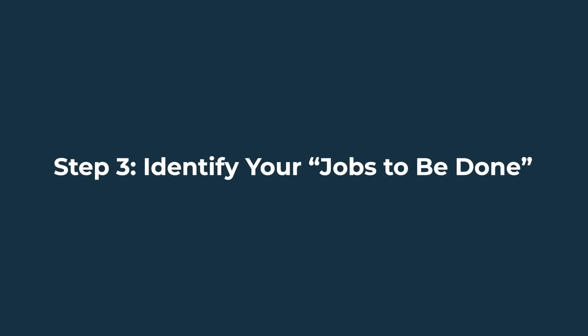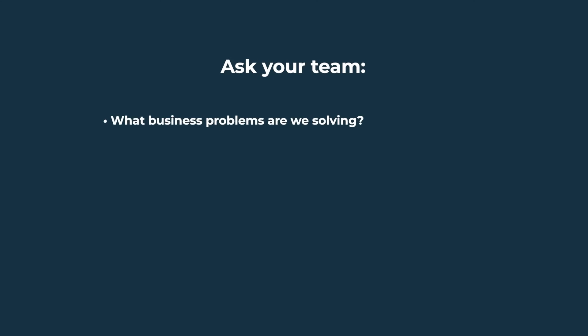These determine whether you need a lean, out-of-the-box CRM versus a more enterprise-grade platform with custom workflows, automation, and integrations. Step three: identify your jobs to be done. Use the jobs-to-be-done framework to prioritize functionality, not features.